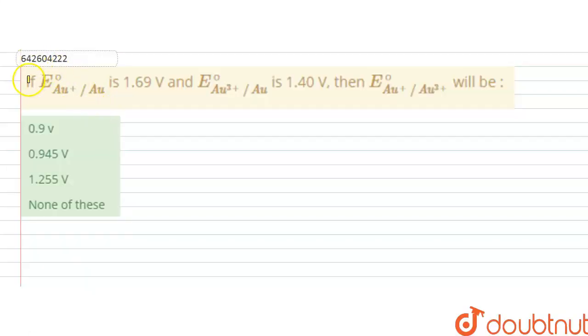Hello students, the question is: if E0 AU+ to AU is 1.69 V and AU3+ to AU is 1.4 V, then E0 for AU+ to AU3+ will be. In this question, we have given the two standard reduction potentials and we have to find out the reduction potential for this reaction.